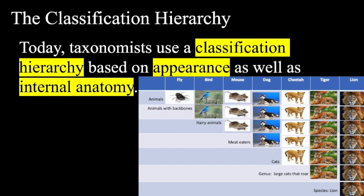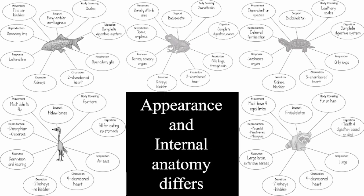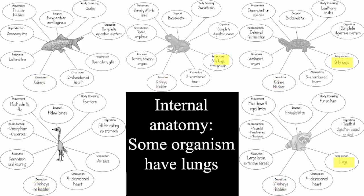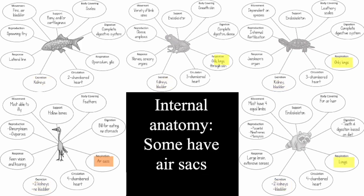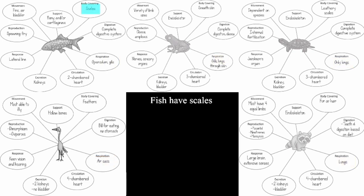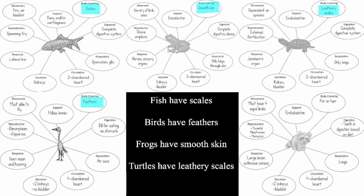Today's standards, taxonomists use a classification hierarchy based on appearance as well as internal anatomy. Internal anatomy differs — some organisms have kidneys, some have lungs, while others like birds have air sacs, and fish have gills. For external features: fish have scales, birds have feathers, frogs have smooth skin, turtles have a leathery scale appearance, and raccoons have fur or hair.